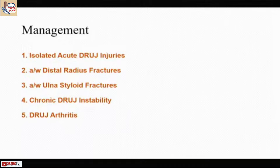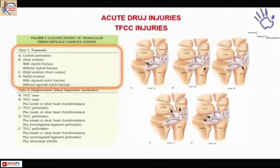DRUJ instability can be seen in a variety of injuries: isolated DRUJ injury (acute or chronic), associated with distal radius fractures, Galeazzi fracture-dislocations with associated ulnar styloid fractures, or as a chronic presentation associated with arthritis. Acute isolated DRUJ injuries are predominantly due to TFCC injuries, and there is a classification by Palmer — Class 1 is traumatic, which we are routinely concerned with.